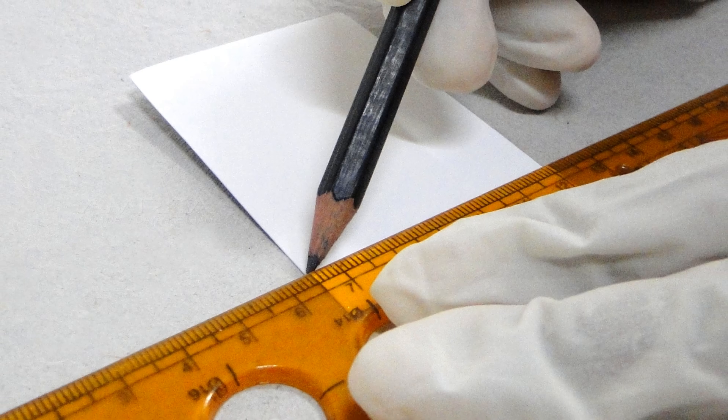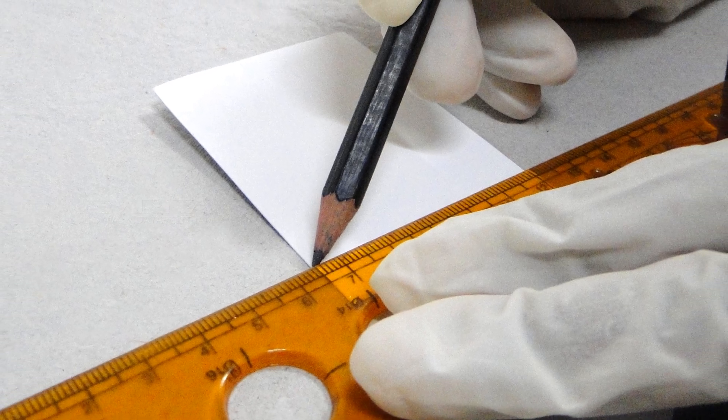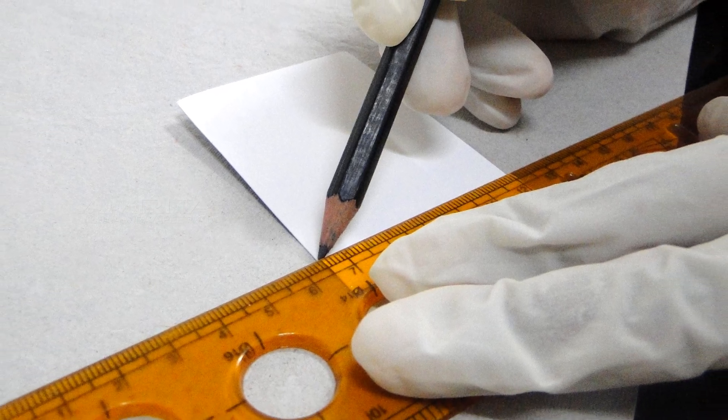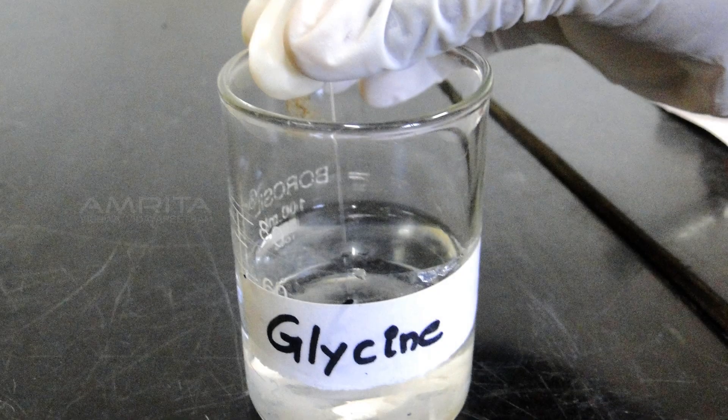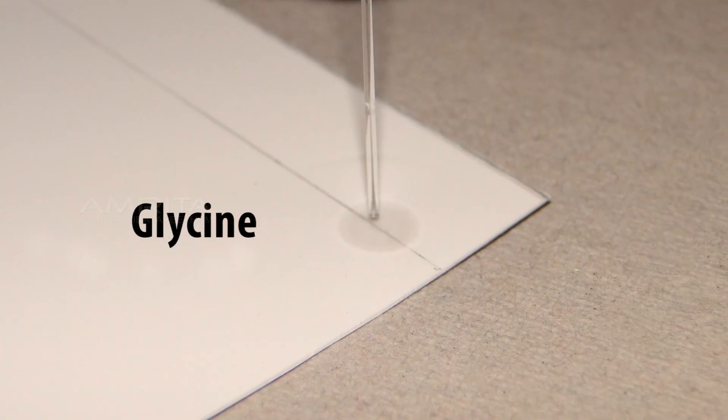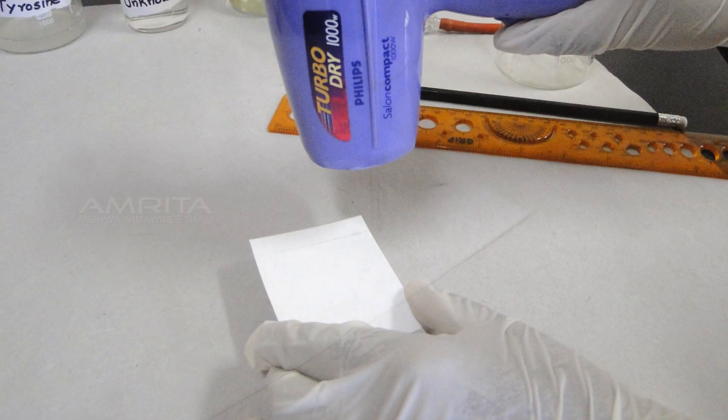Procedure: Cut the plate to the correct size and using a pencil, gently draw a straight line across the plate approximately 1 cm from the bottom. Using a capillary tube, a minute drop of amino acid is spotted on the line. Allow the spot to dry.